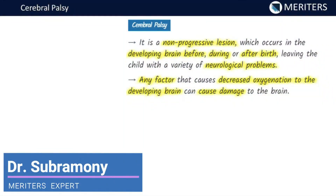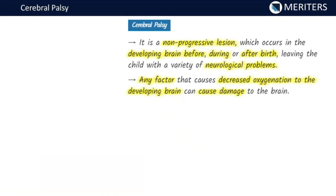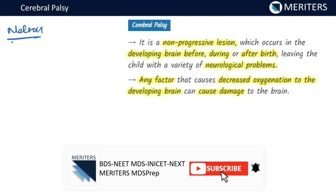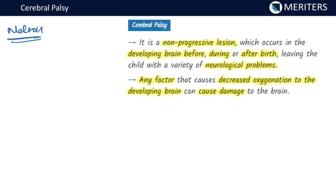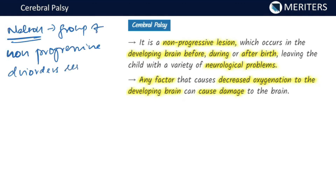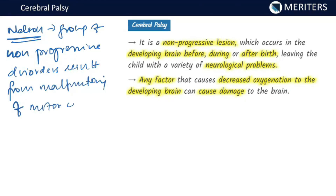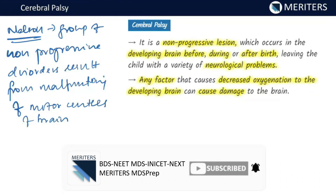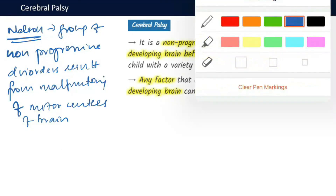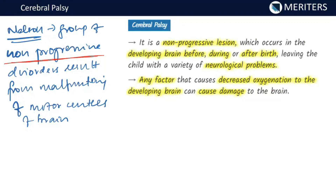Hello everyone. In this session we will have a small discussion about cerebral palsy and its importance with respect to orthodontics. The term cerebral palsy was given by a person called Nelson. Nelson defines cerebral palsy as a group of non-progressive disorders which result from malfunctioning of motor centers of the brain. The key here is non-progressive disorders. The key words are non-progressive and motor centers of the brain.